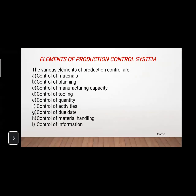In this class, we will start with the elements of a production control system. In the previous class, we learned about the basics of TPC and why TPC is very important in the production system — production planning and control. We also learned about the different types of productions: job production, batch production, and mass production, their characteristics, features, and the factors affecting TPC.